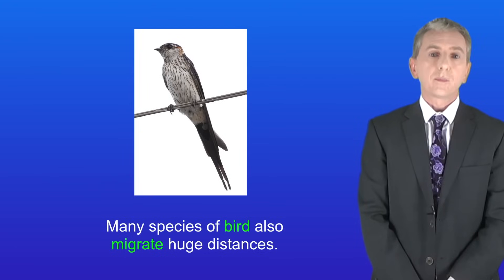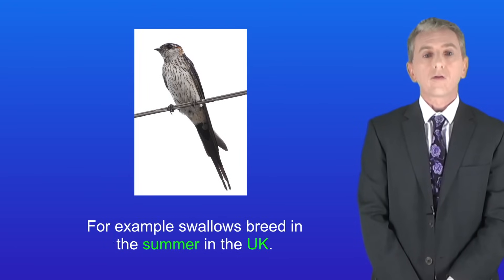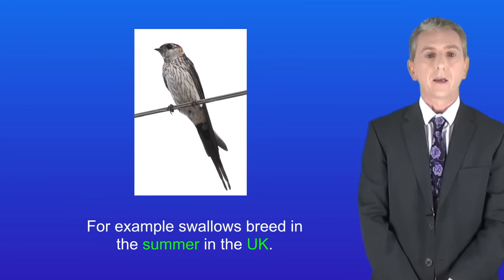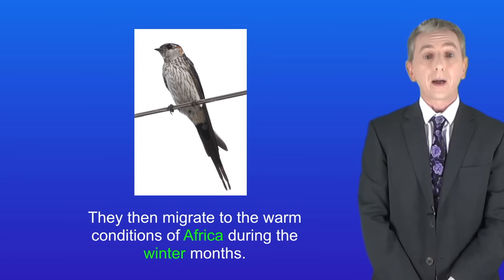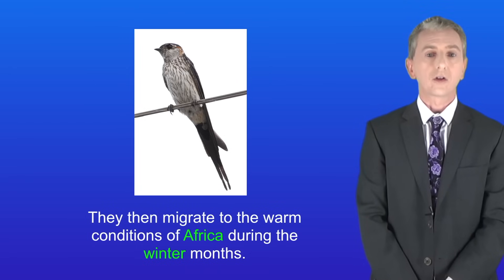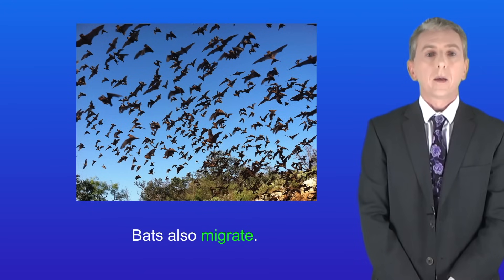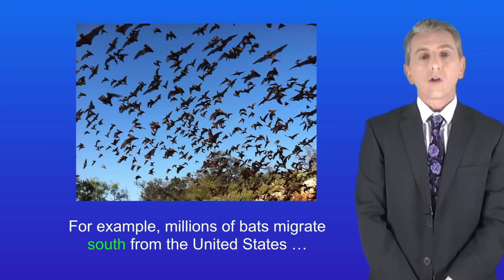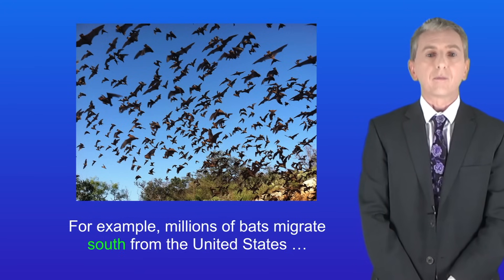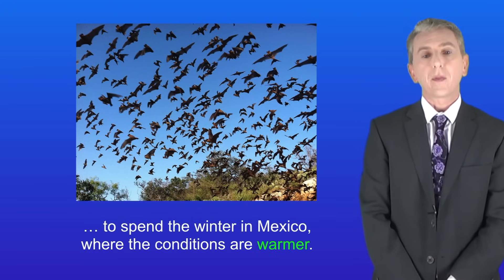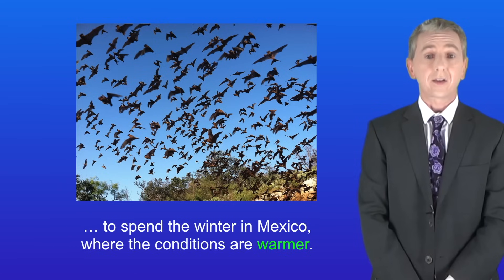Many species of bird also migrate huge distances. For example, swallows breed in the summer in the UK and then migrate to the warm conditions of Africa during the winter months. Bats also migrate — for example, millions of bats migrate south from the United States to spend the winter in Mexico where conditions are warmer.